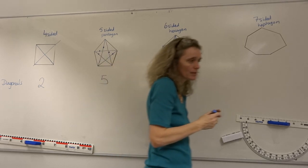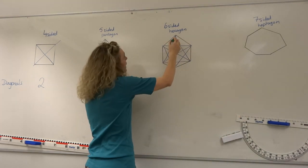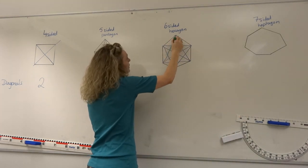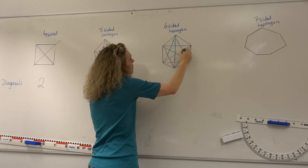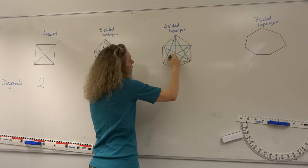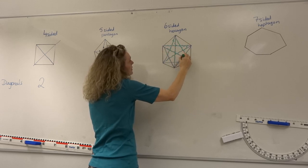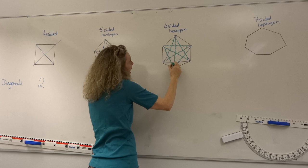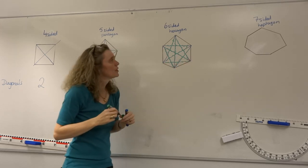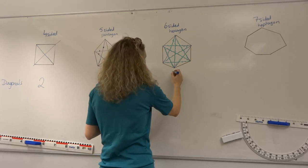So let's, it's almost easier if we use a different pen here, different color pen. Here's one diagonal. One, two, three, four, five, six, seven, eight, nine. So there's the nine diagonals coming out of a hexagon.